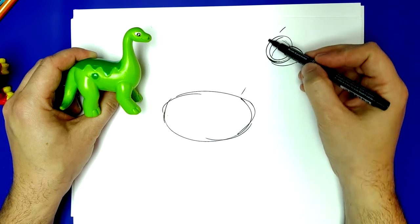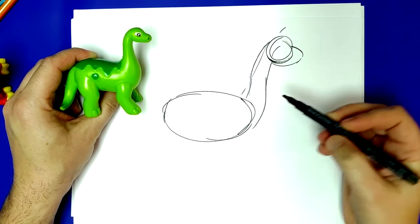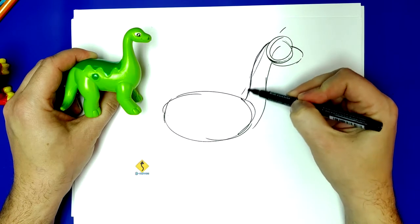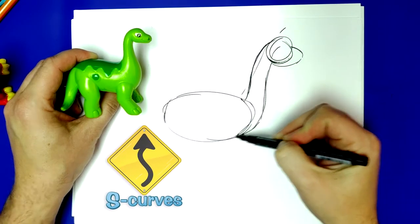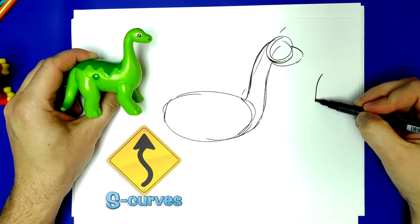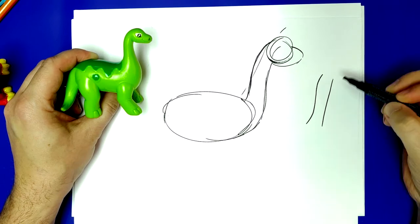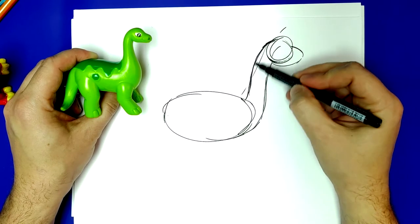Then we're going to draw his neck. If you pay attention, this is actually an S shape. Really, you need to get really good at drawing S's and straight lines. So this is a subtle, stretched out S shape.